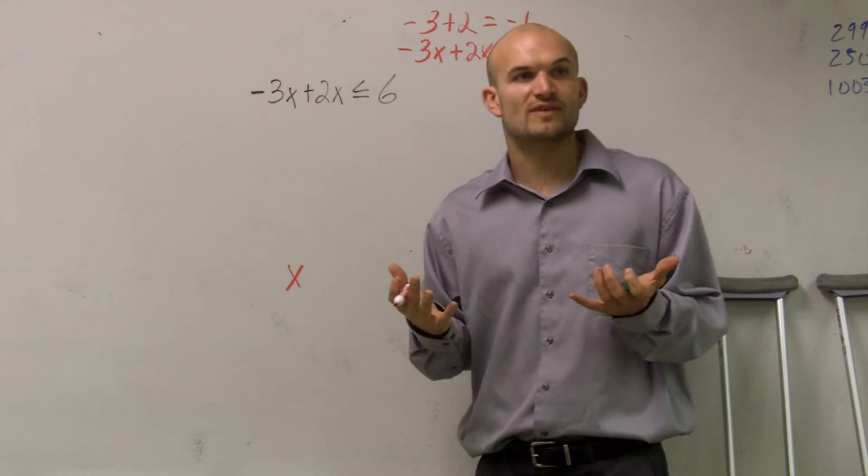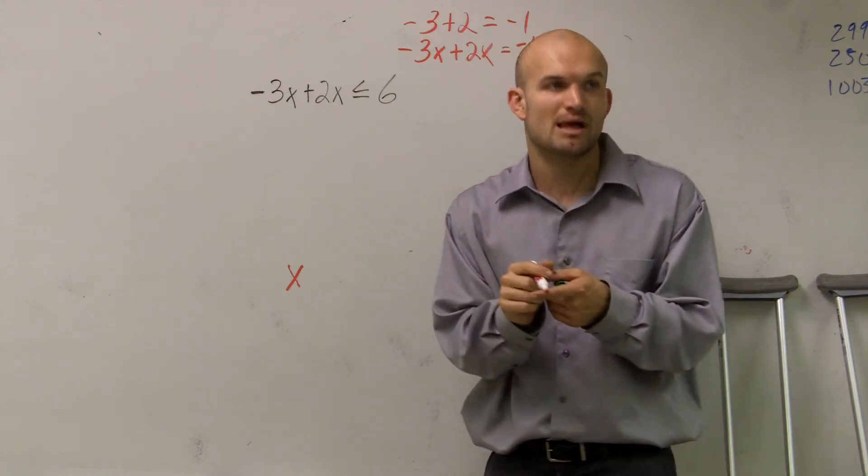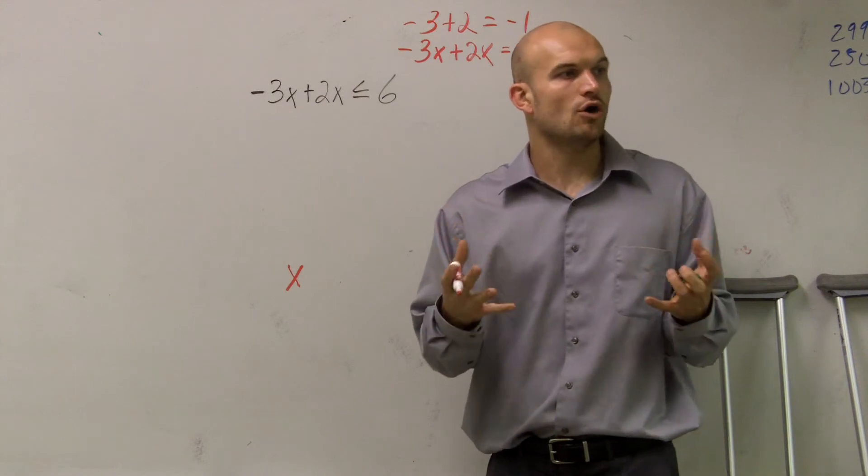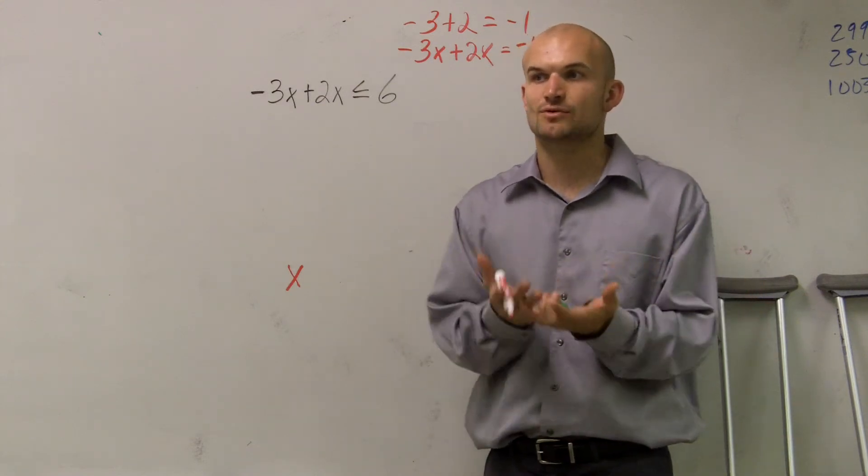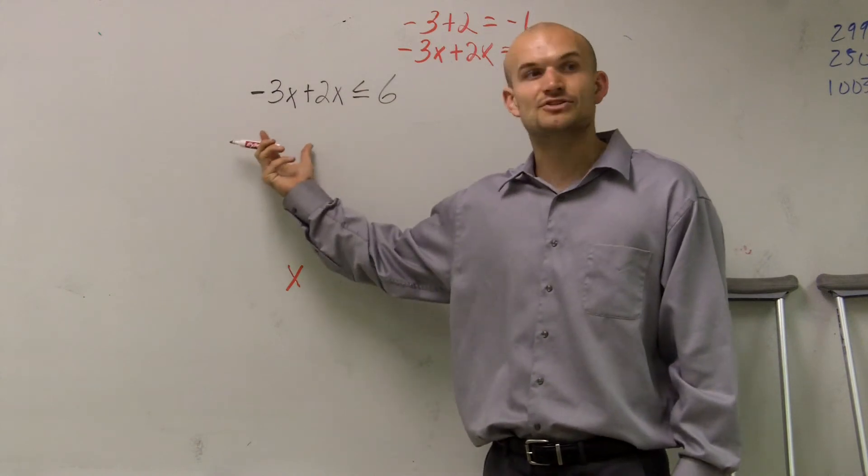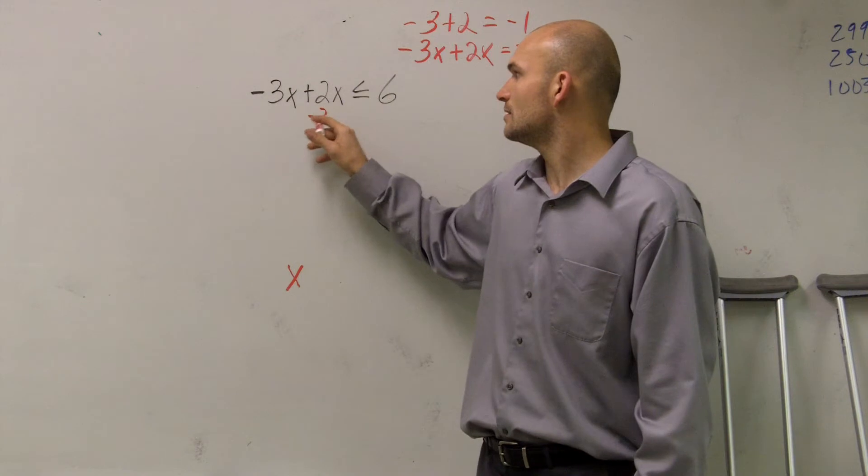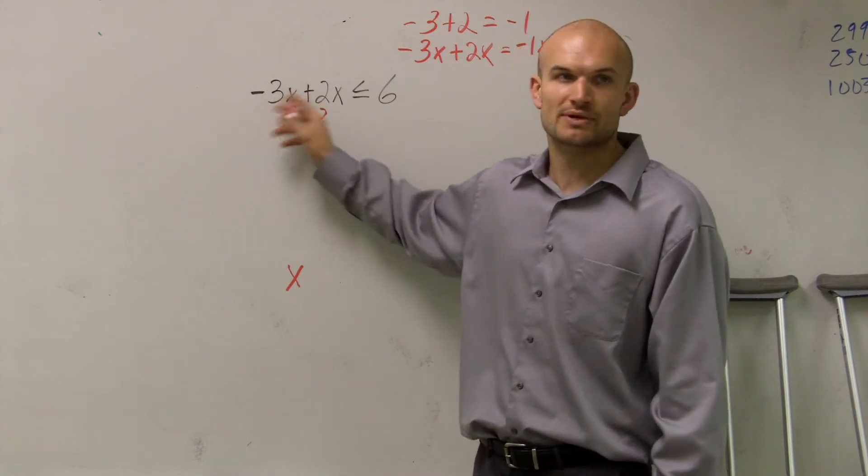So your main important thing, guys, when we're solving, when we're doing multi-step, we're going to have distributed properties. We're going to have a variable on both sides. Our whole goal is to combine our variables into one. So I look at this and I say, all right, is there a way I can combine these two variables? I see a lot of people subtracting 2 on both sides or adding 3 on both sides.